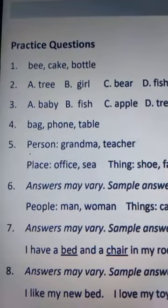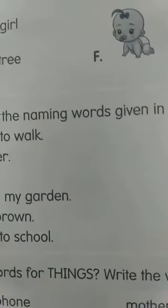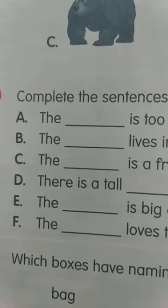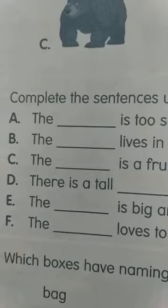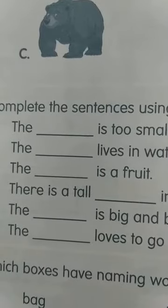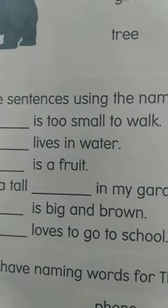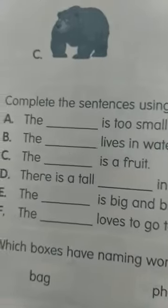Question number 3: Complete the sentences using the naming words given in question number 2. The baby is too small to walk. The fish lives in water. The apple is a fruit. There is a tall tree in my garden. The bear is big and brown. The girl loves to go to school.